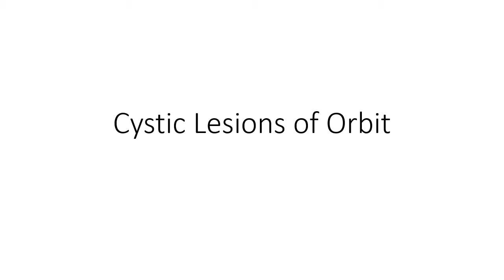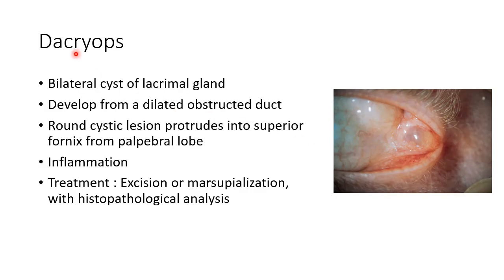Hello guys, this is Indian Vidiko and in this video we are going to discuss about cystic lesions of orbit. First let us discuss about Dacryops. Dacryops is a bilateral cyst of lacrimal gland and they develop from a dilated obstructed duct of lacrimal gland. They present as a round cystic lesion which protrudes into the superior fornix from the palpable lobe of lacrimal gland.